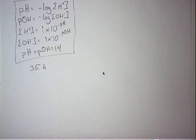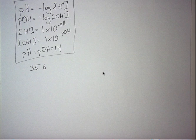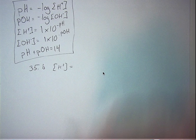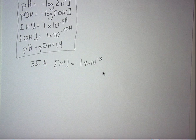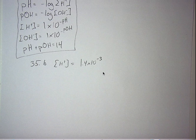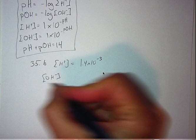So starting at 35B, and if you've got the packet with you, that would be ideal. But I will write it out. They give us that the H+ concentration is 1.4 times 10 to the negative third. And they're asking us to calculate the OH concentration, which is interesting. Starting off with probably the most complicated kind of problem.